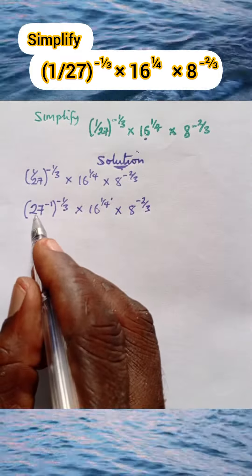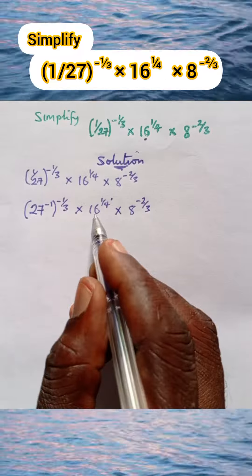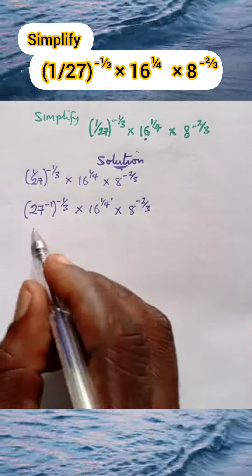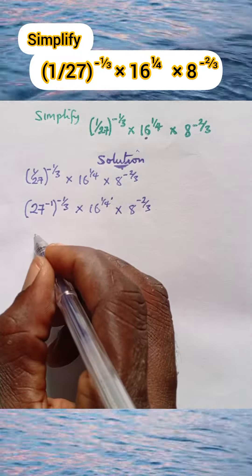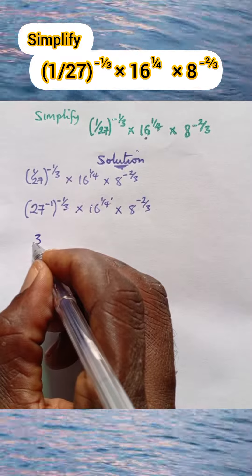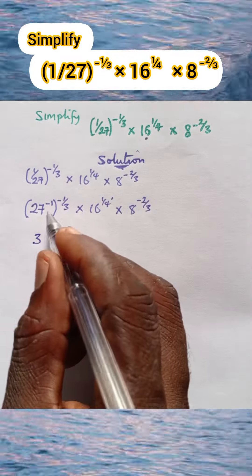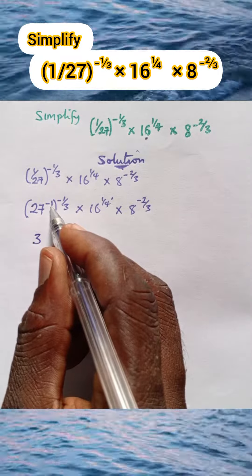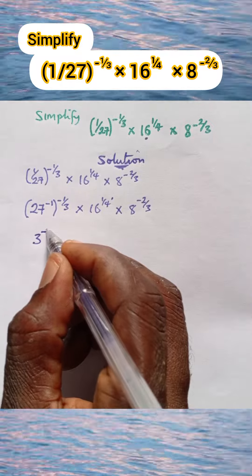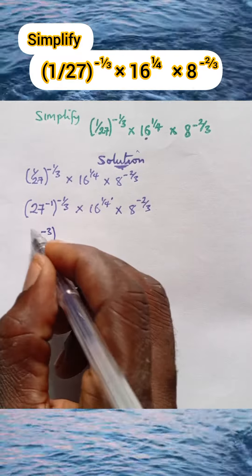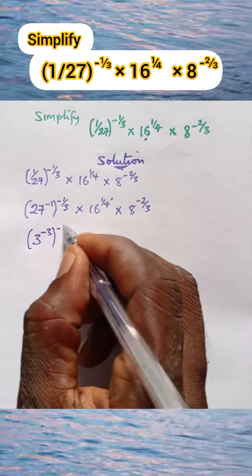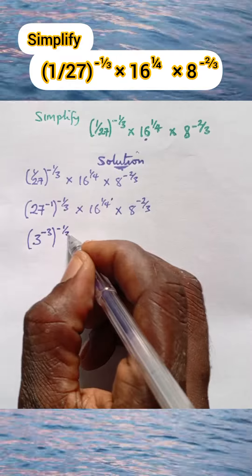Next, we are going to express each of these in index form. 27 is the same thing as 3 raised to the power of 3. But here we already have negative 1, so when using negative 1 to multiply the 3, we have negative 3, all in brackets, raised to the power of negative 1 over 3.